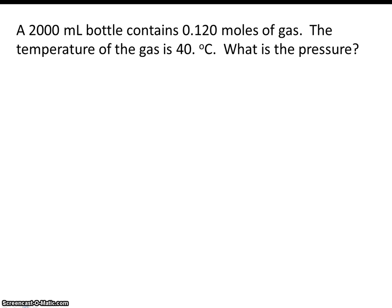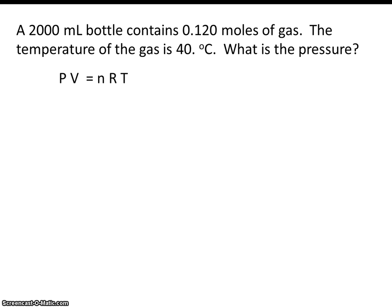An easy way to spot an Ideal Gas Law problem is by noticing that there are no initial and final conditions anywhere in this problem. They simply give us some numbers, and they ask us to solve for an unknown. So there's no initial conditions and final conditions. If you see a problem like that, chances are it's an Ideal Gas Law problem. So we'll just use the equation PV equals nRT.